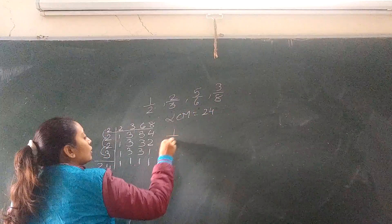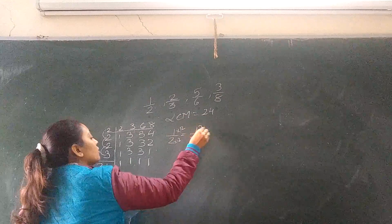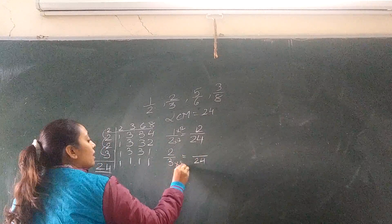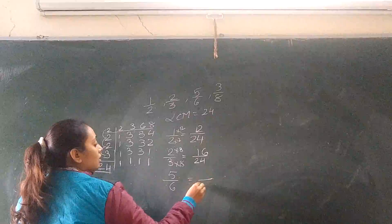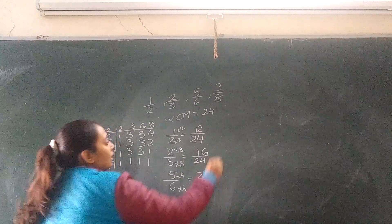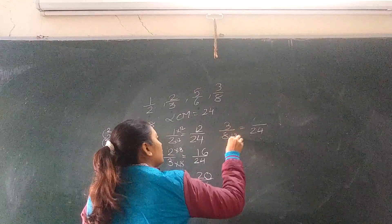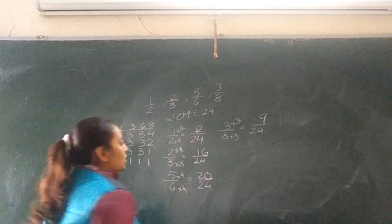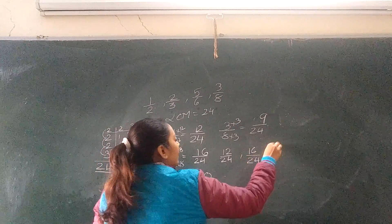Now take 1 upon 2: LCM is 24, and 24 ÷ 2 = 12, so 1 × 12 = 12, giving 12 upon 24. Next, 2 upon 3: 24 ÷ 3 = 8, so 2 × 8 = 16, giving 16 upon 24. Then 5 upon 6: 24 ÷ 6 = 4, so 5 × 4 = 20, giving 20 upon 24. And last, 3 upon 8: 24 ÷ 8 = 3, so 3 × 3 = 9, giving 9 upon 24. The denominators are now all the same.